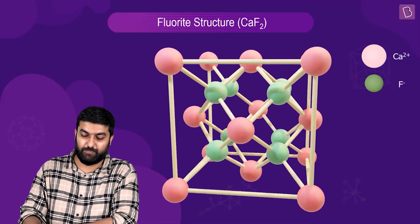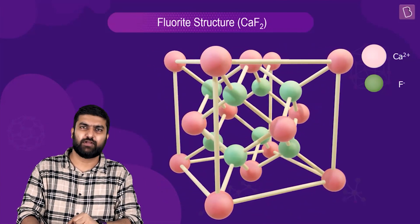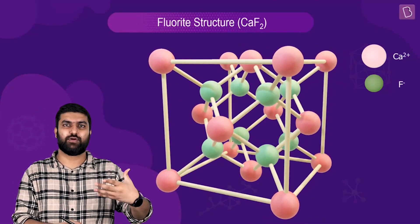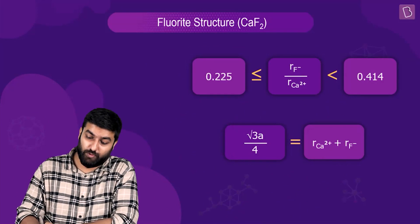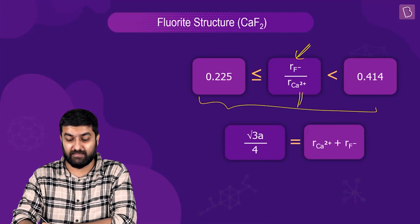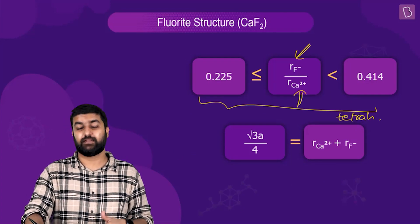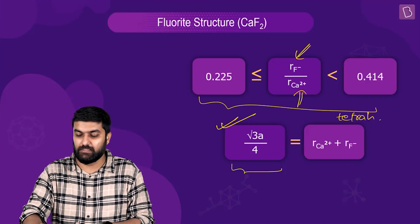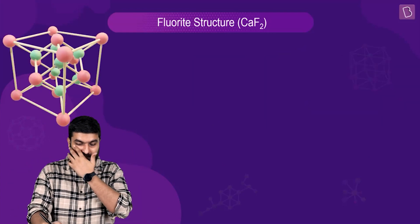Key things to remember: the cation is bigger so it forms the lattice, and the anions — double in number — occupy all the tetrahedral voids. Also notice that the anion is in the numerator and the cation is in the denominator. The distance relationship comes from the tetrahedral void geometry: (√3 × a)/4, which is one-fourth of the body diagonal, equals the sum of the radii of the two ions.